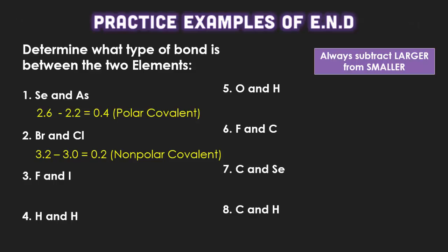We're going to do some practice problems that we want you guys to do in your notebook. As we see already, we have two elements, selenium and arsenic. When they're in a bond, selenium and arsenic have a difference of 0.4, which is what we call polar covalent. In the second example, we have it between bromine and chlorine. That difference is 0.2, which means these are a nonpolar covalent bond. Using reference table S to find the electronegativity differences, figure them out and determine what kind of bond is in the remaining examples. Always subtract the larger number from the smaller number because these numbers are always going to be an absolute value.